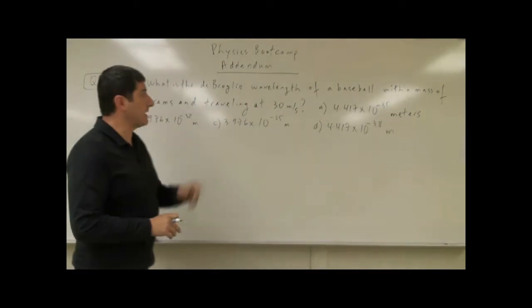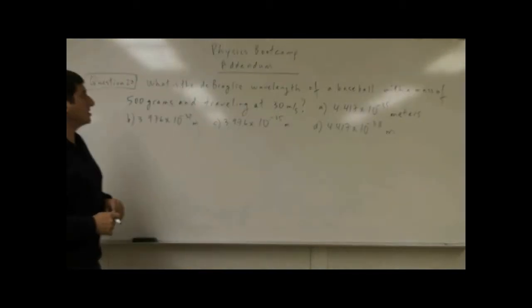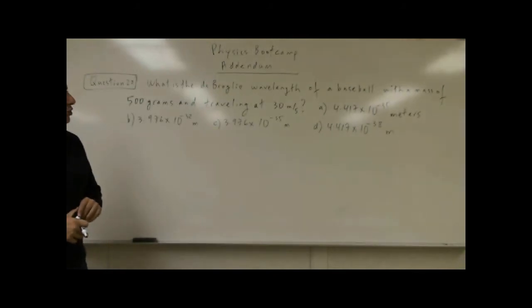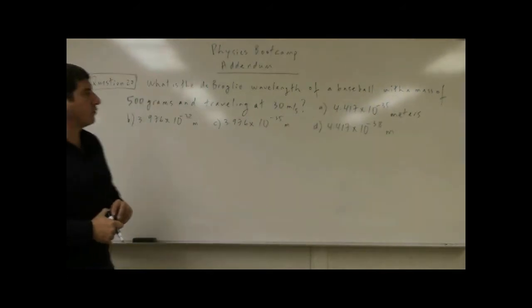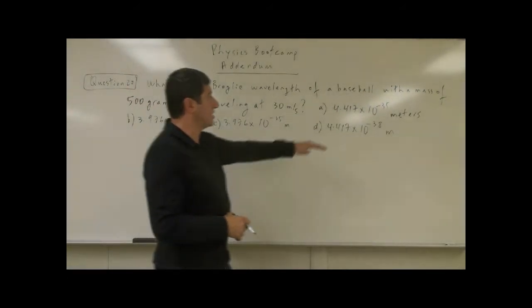Welcome to question 20 of the physics bootcamp addendum questions. What is the de Broglie wavelength of a baseball with a mass of 500 grams and traveling at 30 meters per second? Answer choice A: 4.417 times 10 to the minus 35 meters.